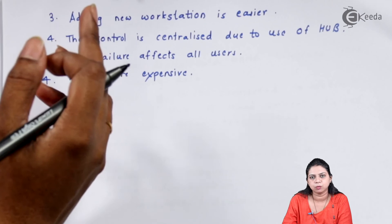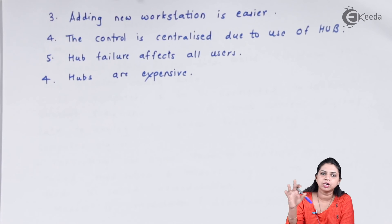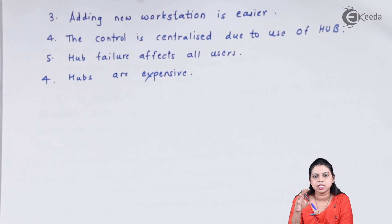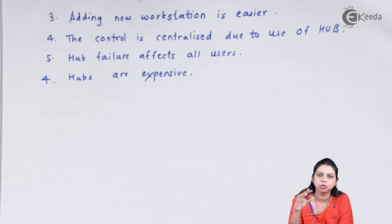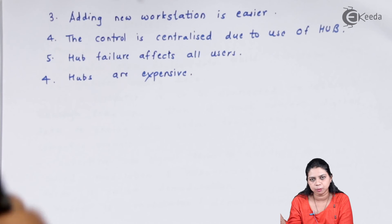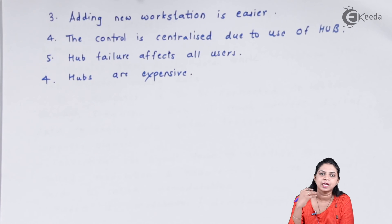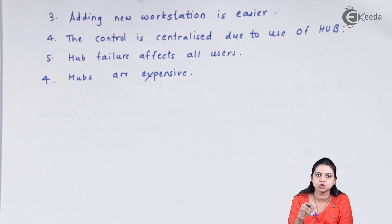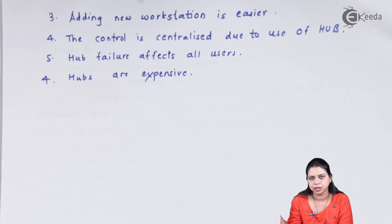In the star topology, all your computers are connected to a hub. The hub is the one who sends and receives the data to the proper destination — you can say the hub routes the data. If computer A wants to send data to computer B, computer A cannot directly communicate with computer B. Computer A has to send the message to the hub, and then the hub will transfer the data to computer B.